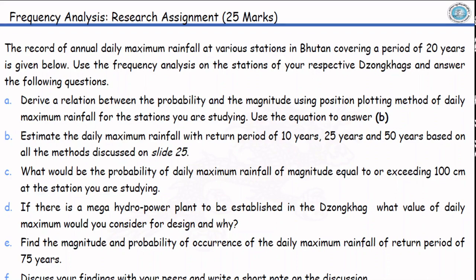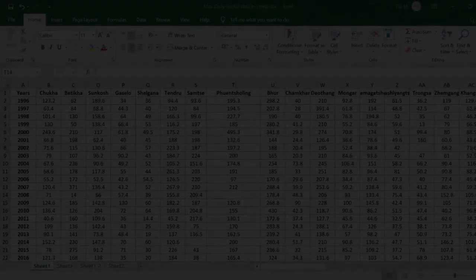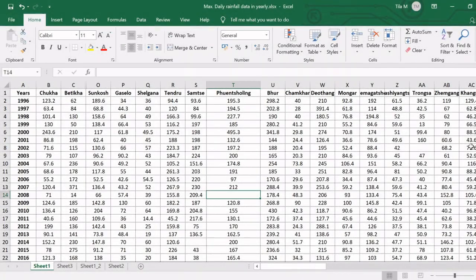Let us take an example of Phuntsholing. We are on the spreadsheet now. As you can see, this is the data, one day maximum rainfall data across all the stations in Bhutan. I'll be analyzing for the station in Phuntsholing.